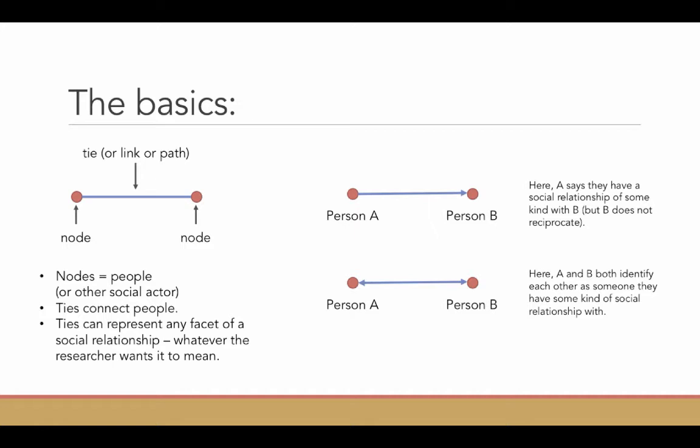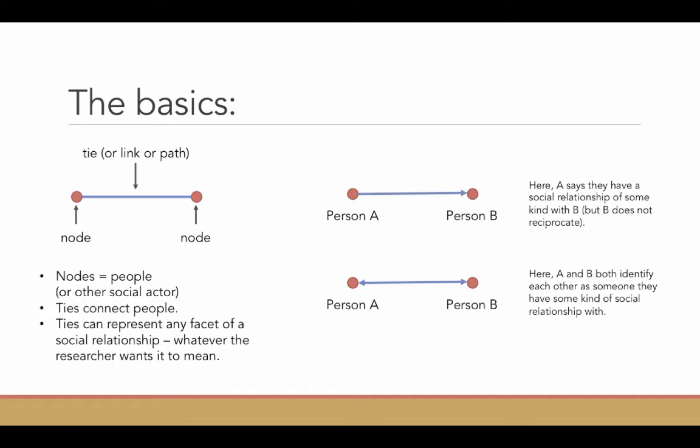Sometimes you'll see ties where there are no arrows. Usually what that means is that each person was not asked to name their friends or that the nature of the tie means that both people have to be involved in that relationship. You can imagine a scenario where one person thinks they're friends with somebody else, but that person does not think they're friends with the other. But there are some scenarios where in order for the link to be there, both people have to be involved.